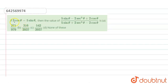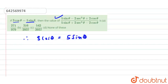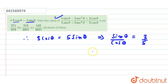Here we are given that 3cosθ equals 5sinθ, and we need to find the value of the given expression. Since 3cosθ equals 5sinθ, this implies that sinθ/cosθ equals 3/5, which means tanθ equals 3/5.